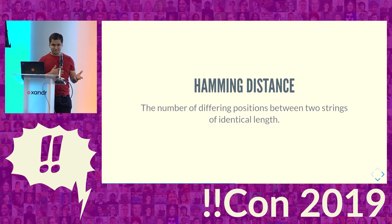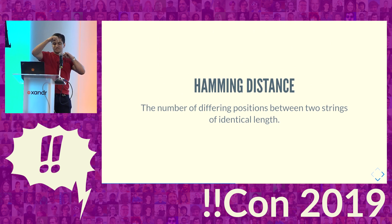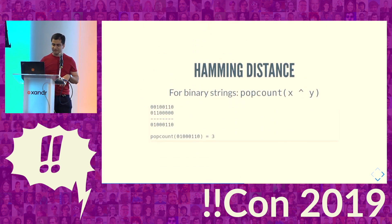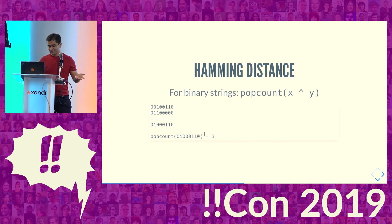Related to hamming weight is the concept of hamming distance. You take two strings of equal length and count the number of positions in which they differ. For binary strings, you can do this very easily with two operations: XOR and pop count. For example, these two strings differ in three positions, and the pop count of the XOR result is three.